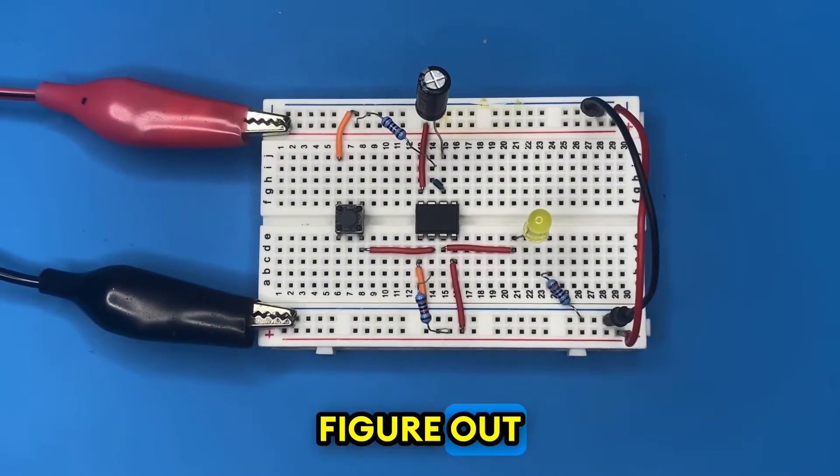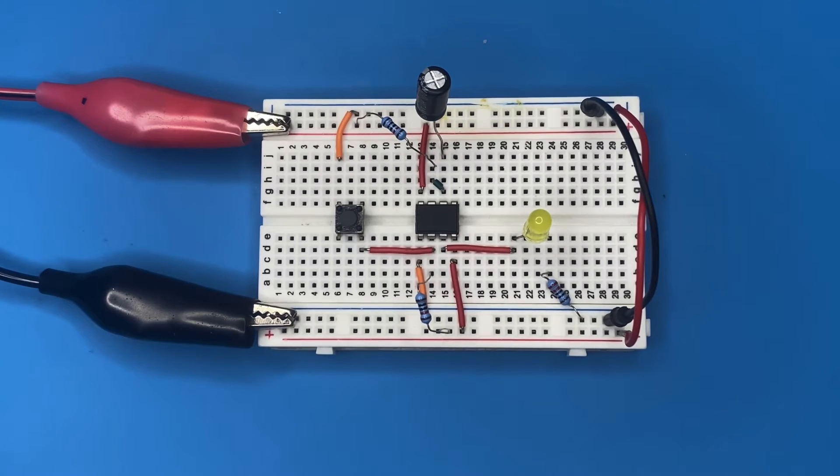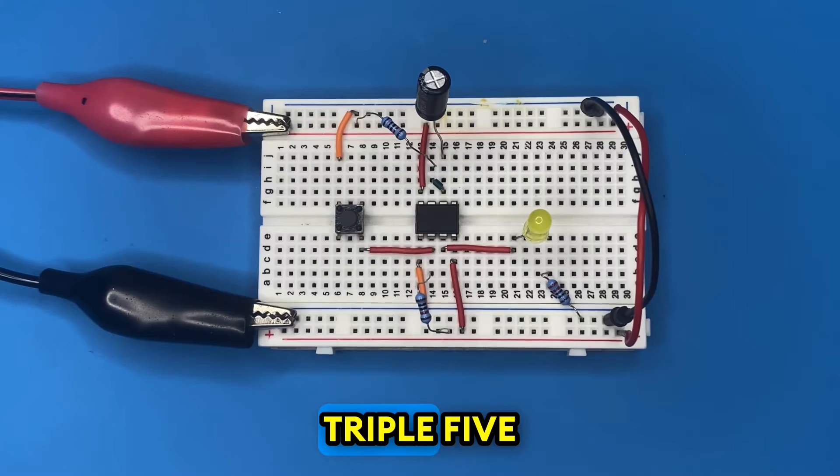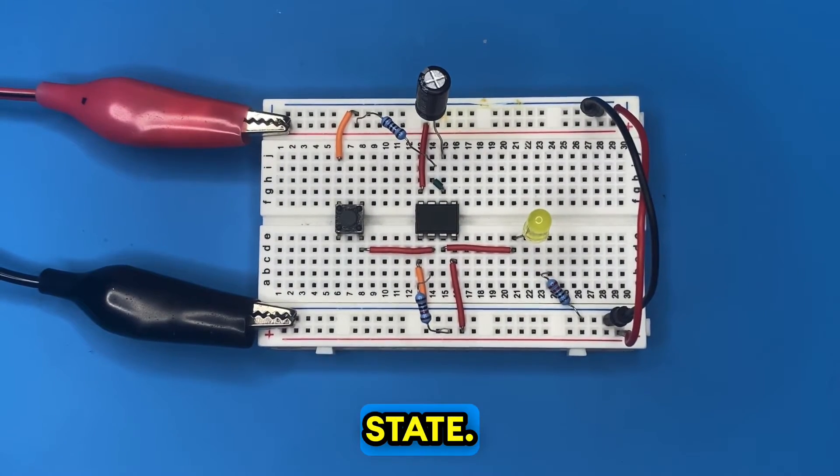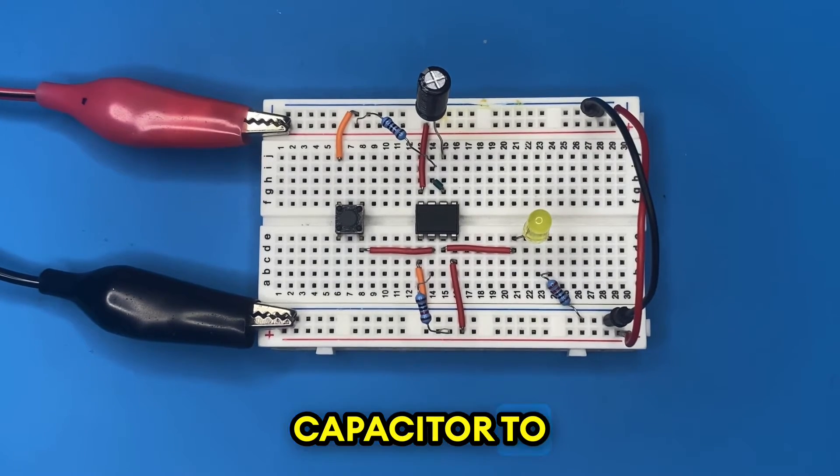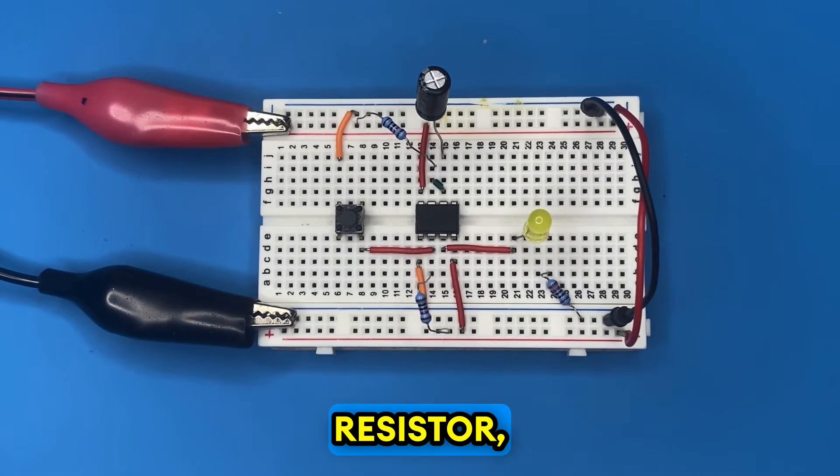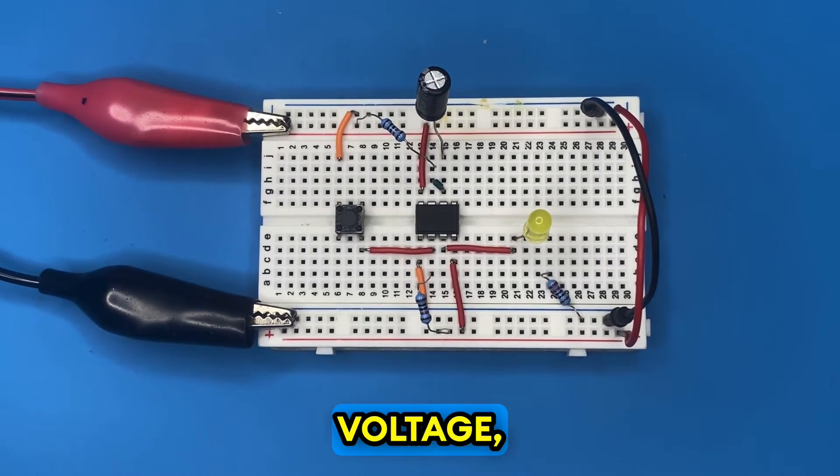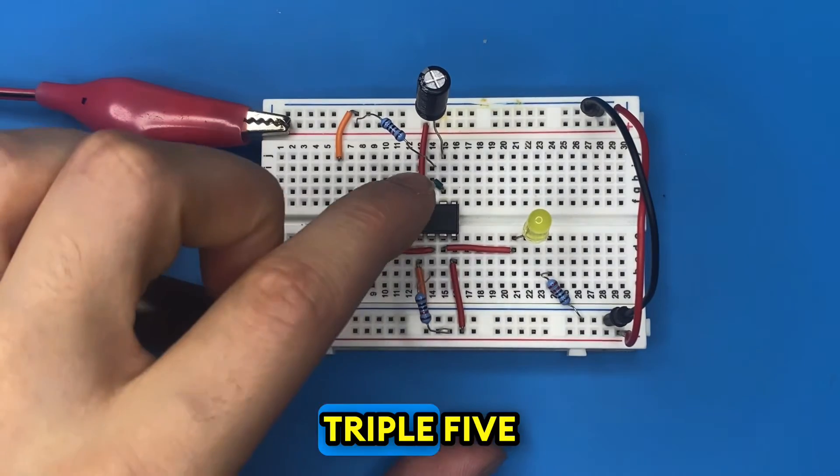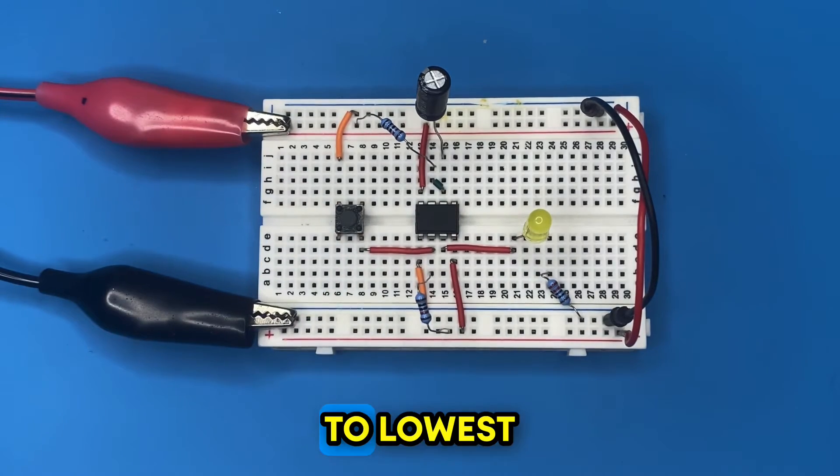Now let's figure out how our monostable circuit works. In the beginning, the discharge pin of the 555 timer IC, pin 7, is connected to ground so it's in a low state. This allows the capacitor to charge through the resistor, our 10 kilo ohm resistor, until it reaches a threshold voltage. Once the capacitor reaches this voltage, the output of the 555 timer IC, pin 3, flips to low state which then turns off the LED.